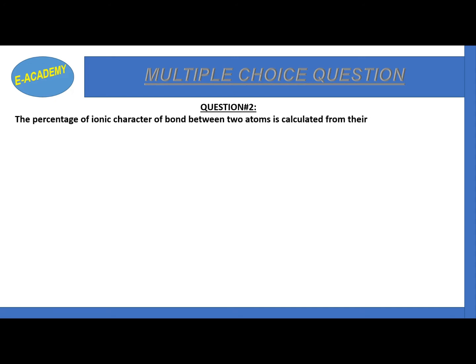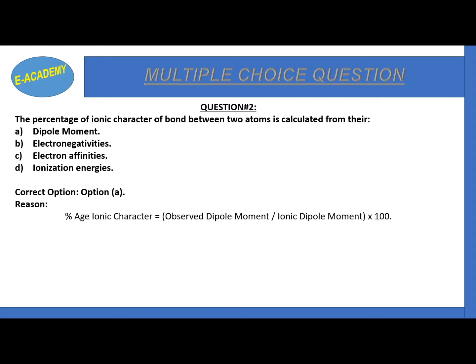Now question number 2. The percentage of ionic character of bond between two atoms is calculated from their dipole moment, electronegativities, electron affinities, or ionization energies. The percentage of ionic character of any bond between two atoms is calculated by the help of dipole moment. The correct option is option A.